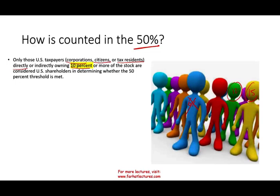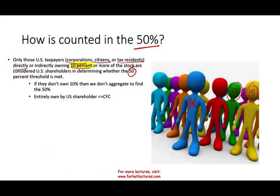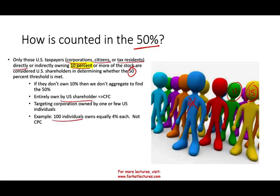The 12% and 15% individuals are counted toward the aggregate 50%. When counting toward the 50%, only individuals or entities — whether a corporation, partnership, or trust — owning more than 10% are included. So if you have a corporation owned entirely by one U.S. shareholder structured overseas, that's clearly a CFC, because that one shareholder owns 100%, which is more than 50%. This rule targets corporations owned by one or a few U.S. individuals. If, for example, 100 individuals each own 4%, that is not a Controlled Foreign Corporation.